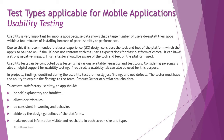To achieve satisfactory usability, an app should cater to all these points: be self-explanatory and intuitive to any end user; allow for user mistakes — meaning if an error occurs, there should be an error message telling them what is wrong so they can correct it; be consistent in wording and behavior; abide by the design guidelines of the platform; and make needed information visible and reachable for each screen size and type. Often information messages are placed in a corner where the user is not expected to navigate, so you may lose out even if the features are available.